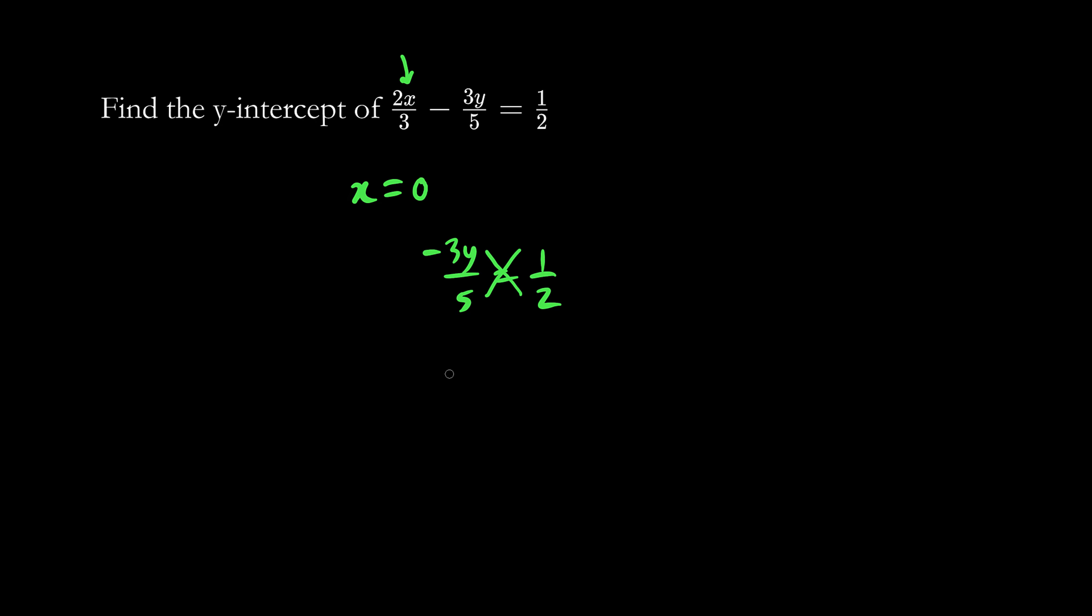Negative 3y times 2 is negative 6y, and 5 times 1 is 5. We divide both sides by negative 6, so y equals 5 over negative 6. This is the y-intercept, which also implies the point (0, -5/6).